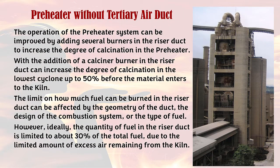The operation of the preheater system can be improved by adding several burners in the riser duct to increase the degree of calcination in the preheater. With the addition of a calciner burner in the riser duct, the degree of calcination in the lowest cyclone can be increased up to 50 percent before the material enters the kiln. The limit on how much fuel can be burned in the riser duct can be affected by the geometry of the duct, the design of the combustion system, or the type of fuel. Ideally, the quantity of fuel in the riser duct is limited to about 30 percent of the total fuel, due to the limited amount of excess air remaining from the kiln.